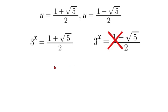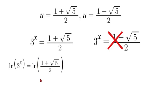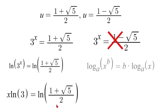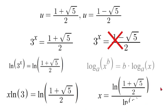That leaves us with one possible scenario. To solve it we are going to use the natural log function, applying it to both sides: natural log of 3 to the power of x equals natural log of 1 plus square root of 5 over 2. Using the logarithm property that log of x to the power of b equals b times log x, we move the exponent to the front, giving x times natural log of 3 equals natural log of 1 plus square root of 5 over 2. Dividing both sides by natural log of 3, we get x equals natural log of 1 plus square root of 5 over 2, all over natural log of 3.